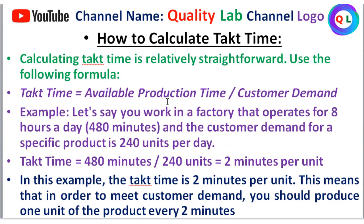Takt Time is available production time divided by customer demand. Let's say you work in a factory that operates for 8 hours a day. The customer demand for a specific product is 240 units per day.